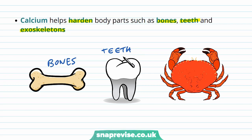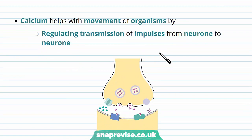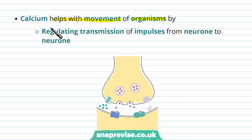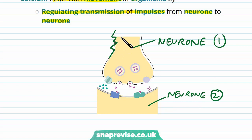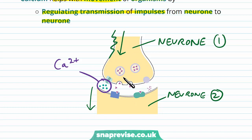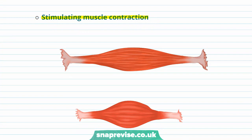Calcium doesn't only have a structural role; it helps with the movement of organisms too. In the synapses, it can regulate transmission of impulses from one neuron to the next neuron. Here's a vague diagram of one neuron connecting to the next one, with the neuron being the cell of the nervous system. The electrical impulse travelling needs to be sent across a gap, and across the synapses we use calcium to allow this to happen. Calcium is also the most important ion in stimulating muscle contraction, allowing muscles to shorten and move joints.